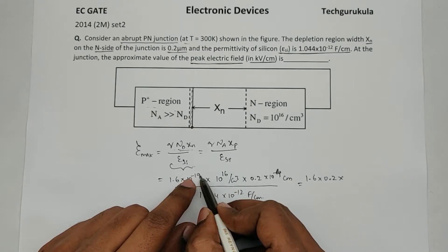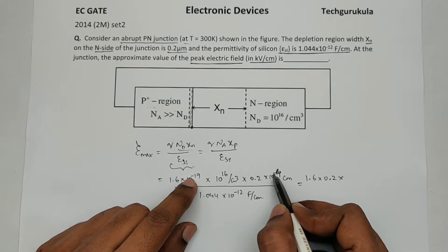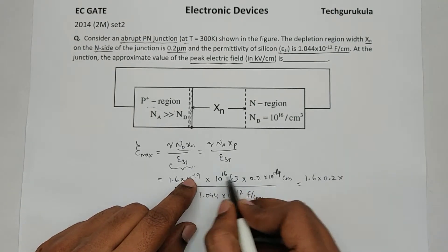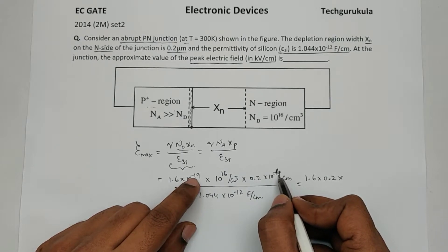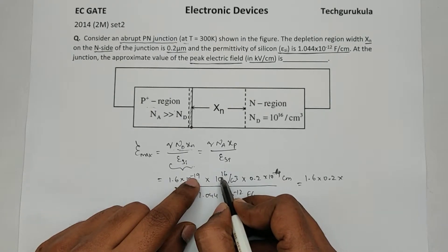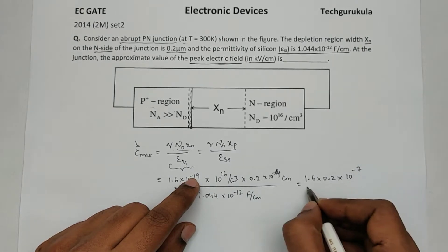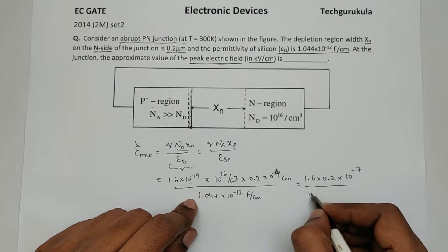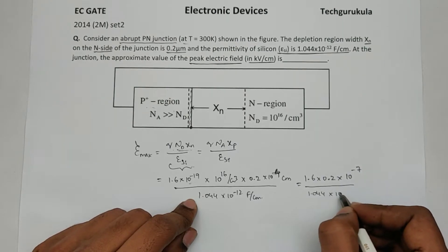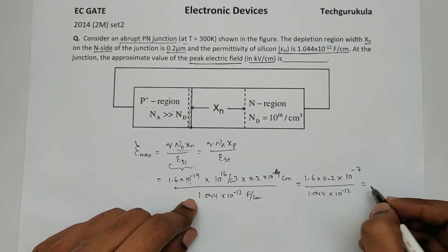So this is equal to, let me write, 1.6 times 0.2 times, now let us reduce the powers here, so 10^-19 plus -4 is 10^-23. Minus 23 plus 16 is 10^-7 divided by this value 1.044 times 10^-12.